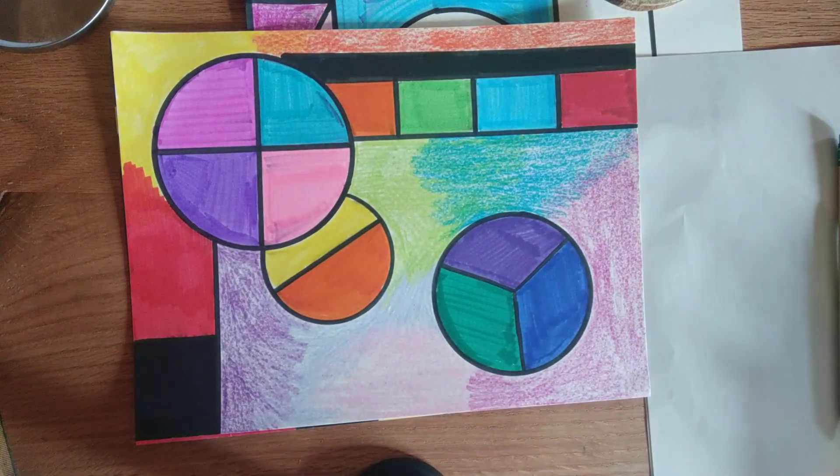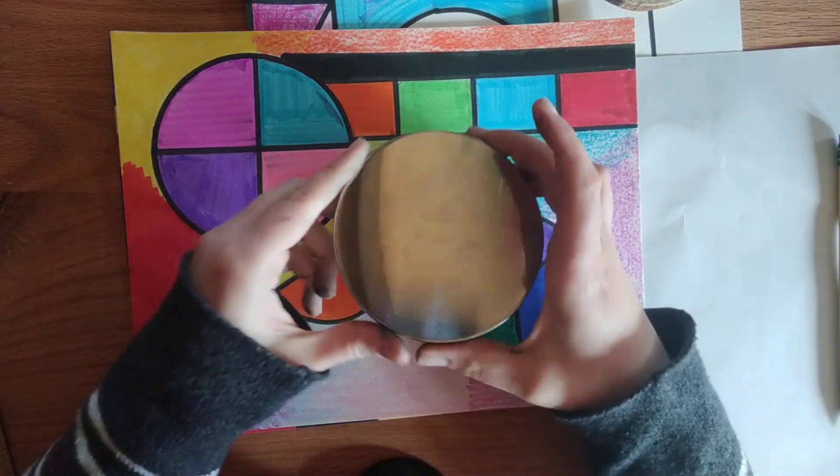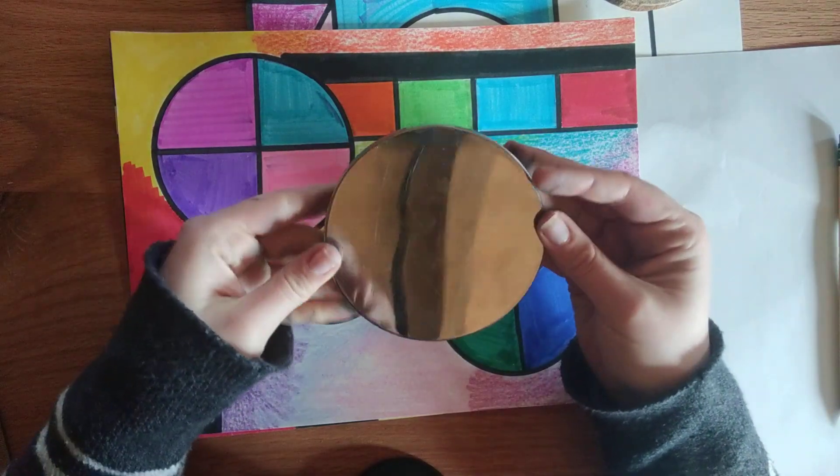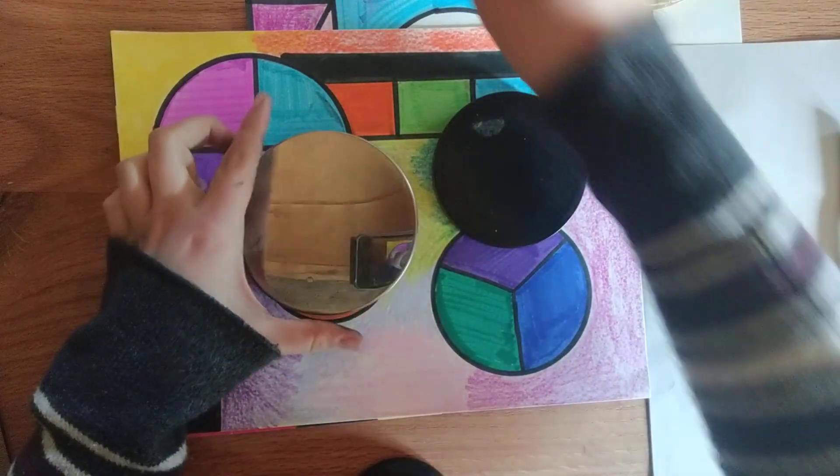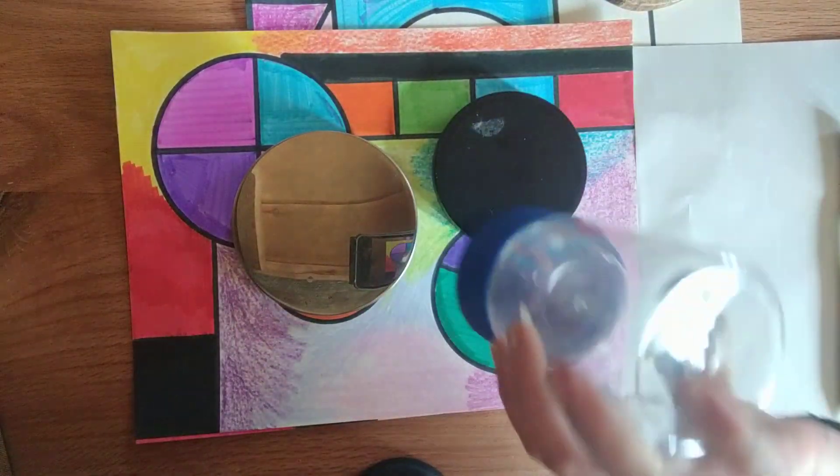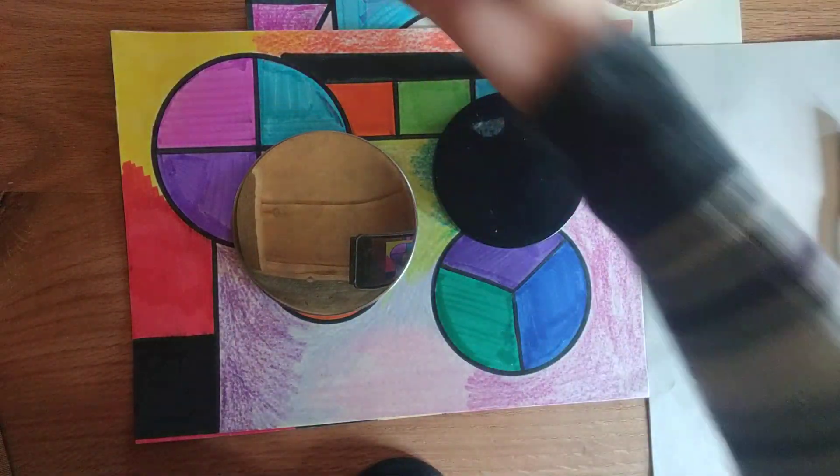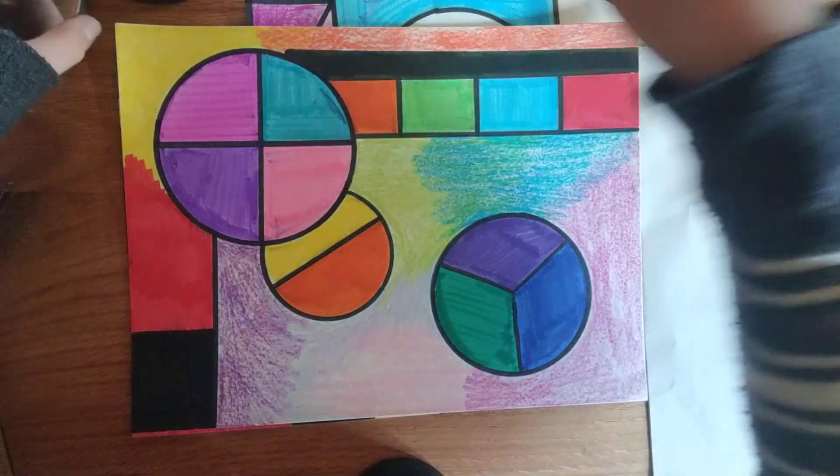When you're drawing circles, sometimes it helps to have something round. I have this lid for my candle and I thought that was a perfect circle. I also have this other lid. I have this little jar thingy that I turned upside down and traced. It's nice to have those tracers around.